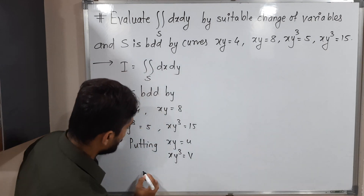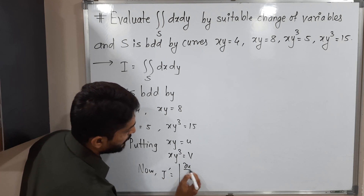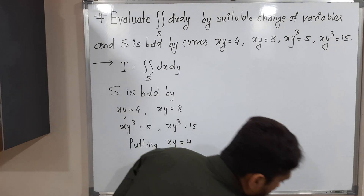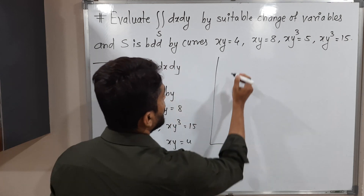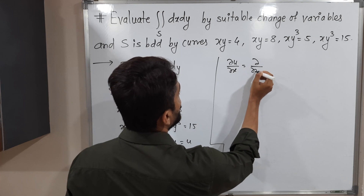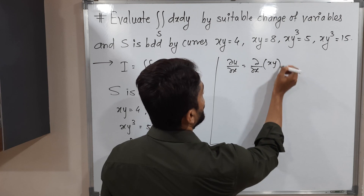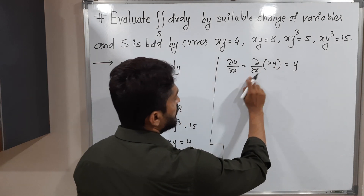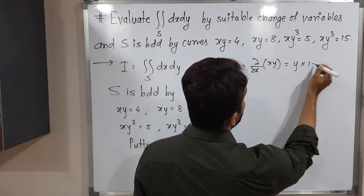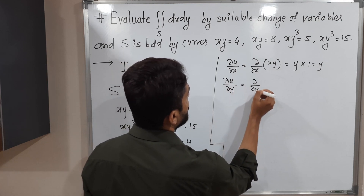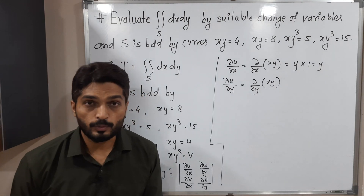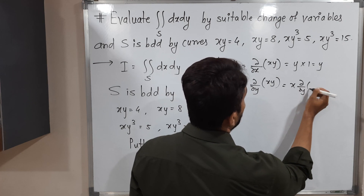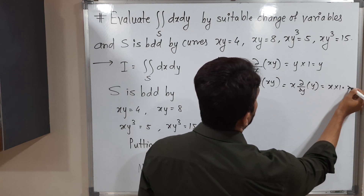So J' equals the determinant with entries ∂u/∂x, ∂u/∂y, ∂v/∂x, ∂v/∂y. The derivative of u = xy with respect to x: y is constant, it comes outside, so ∂u/∂x = y. The derivative of u with respect to y: x is constant, derivative of y is 1, so ∂u/∂y = x.